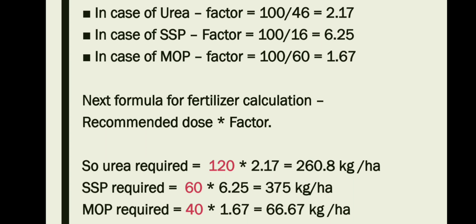Now we calculate the factor for SSP: we divide 100 by the phosphorus content in SSP, which is 16%, so 100 divided by 16 equals 6.25. Similarly for MOP, we divide 100 by the potassium content in MOP, which is 60%, so 100 divided by 60 equals 1.67. These are the three factors.